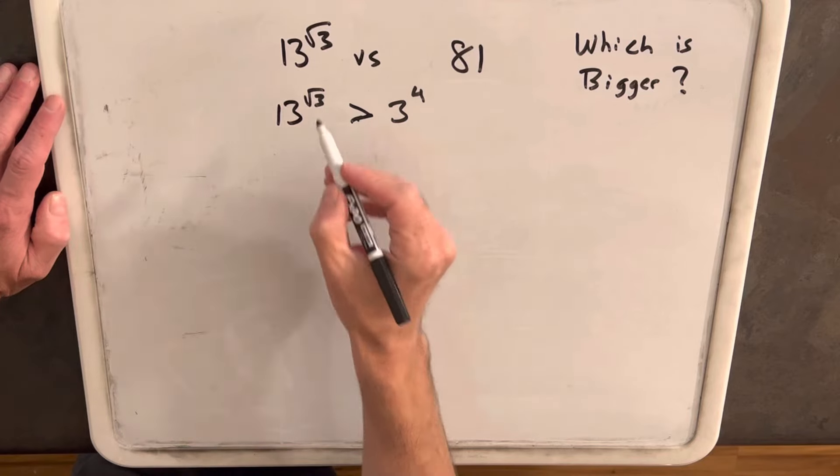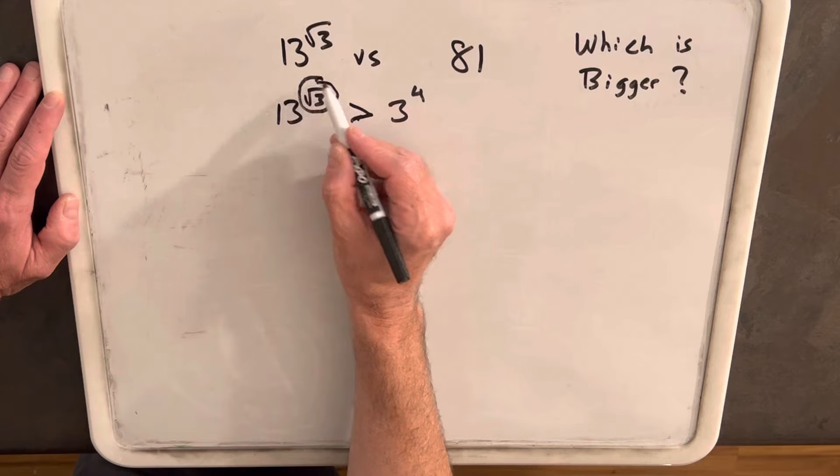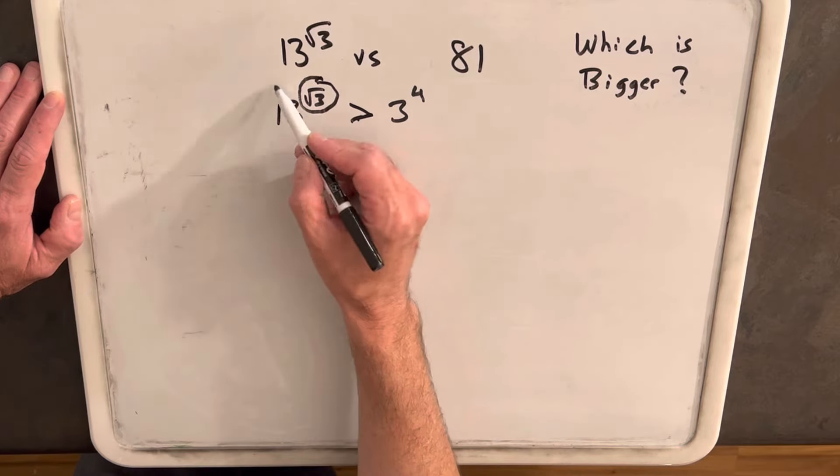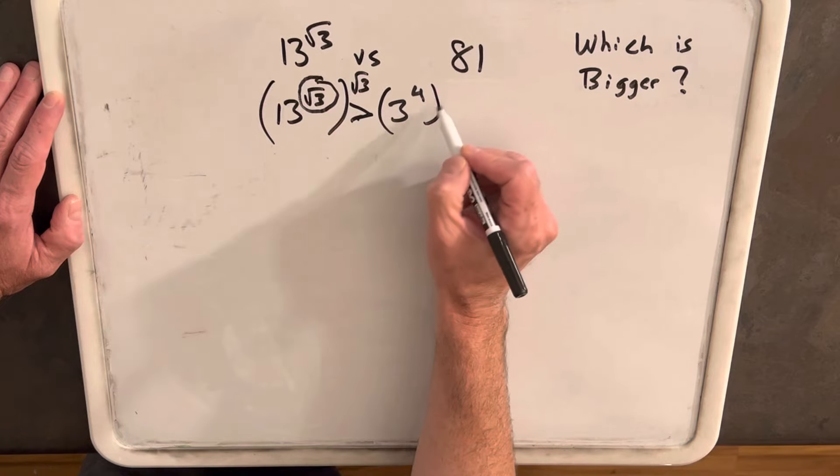Then, the thing we really need to do is we need to do something about having a radical in the exponent. It's just harder to deal with. So what I'm going to do is raise both sides to the square root of 3.